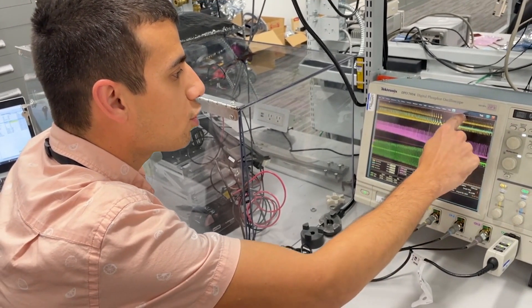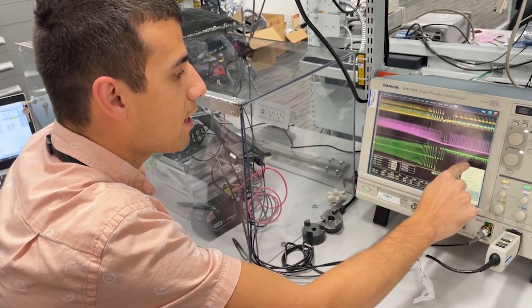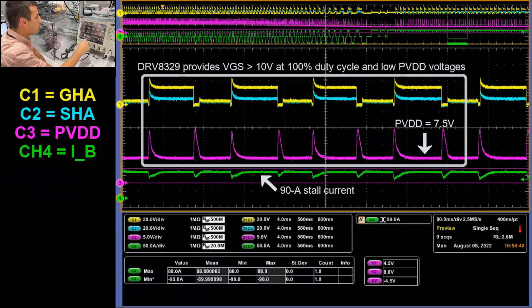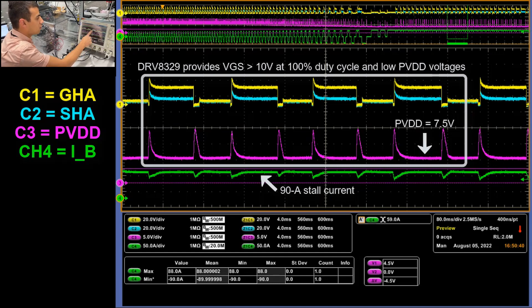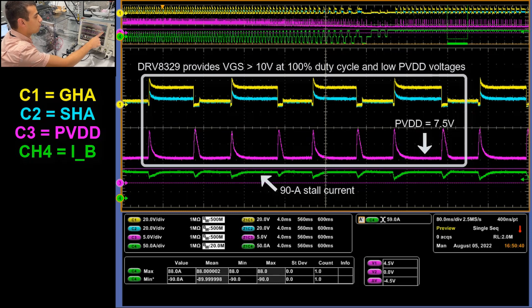When we get to our stall current condition, as you can see here on the right, we maintain a stall current of around 90 amps, and we can continue to try to drive the motor in this stall condition having 100% duty cycle while PVDD stays above the undervoltage threshold.